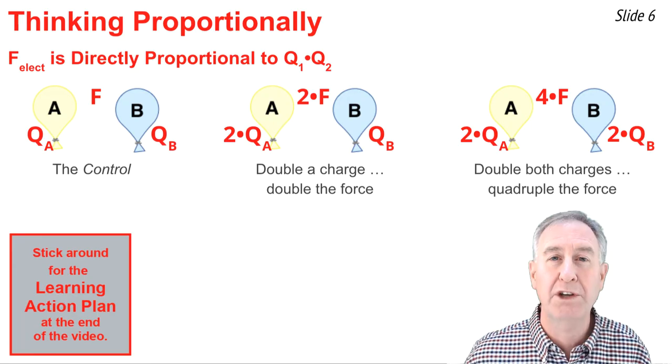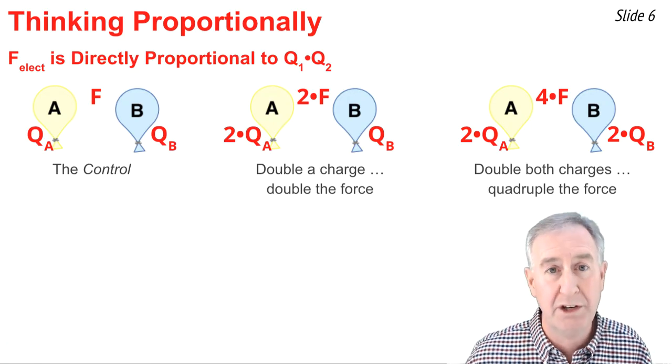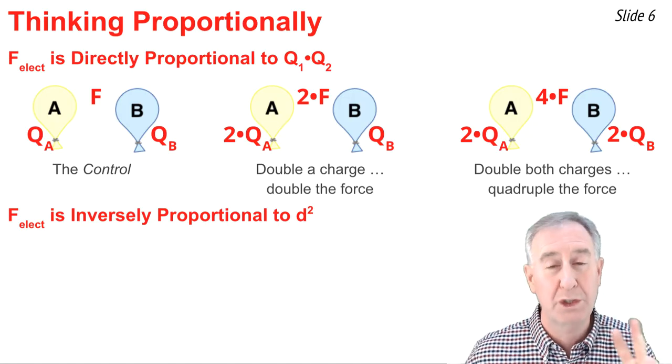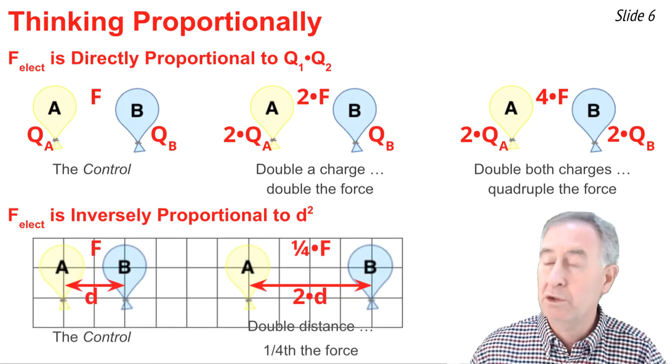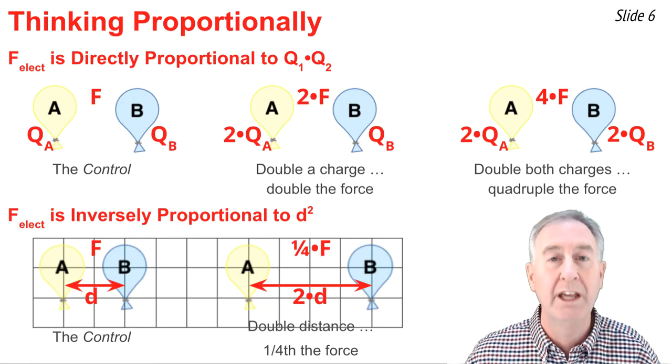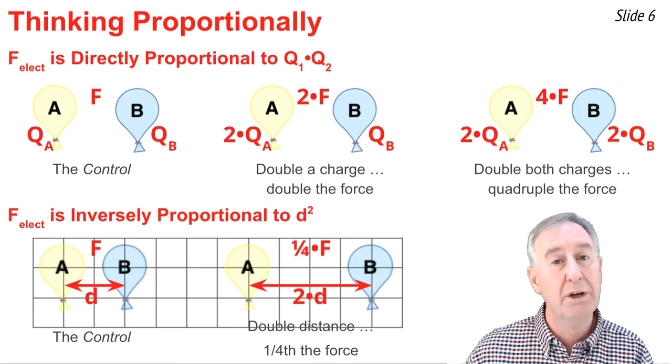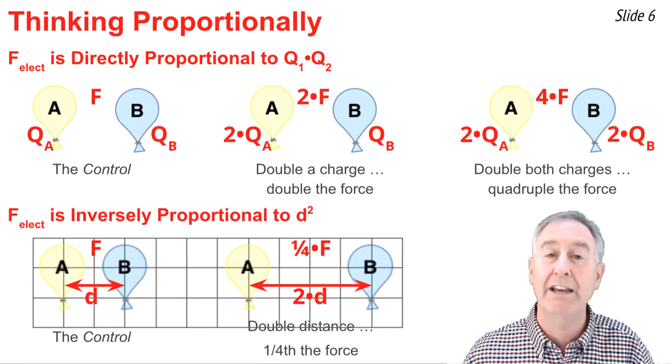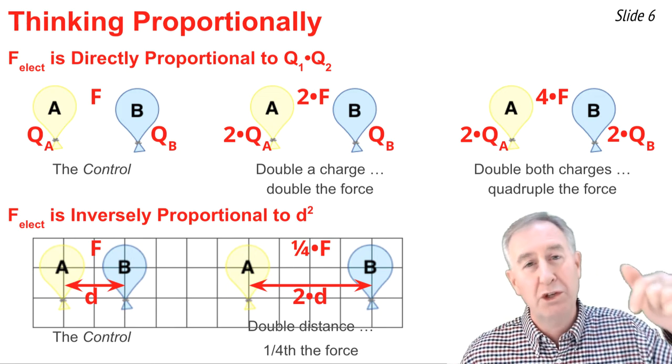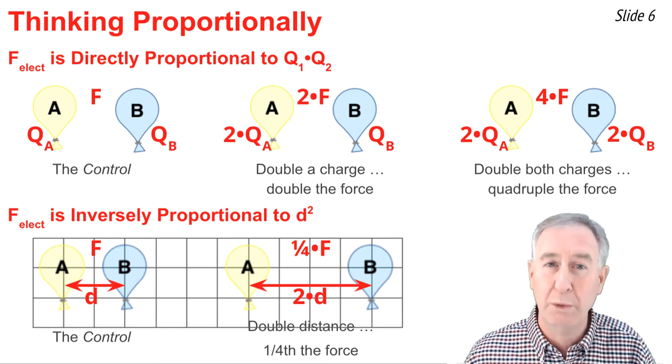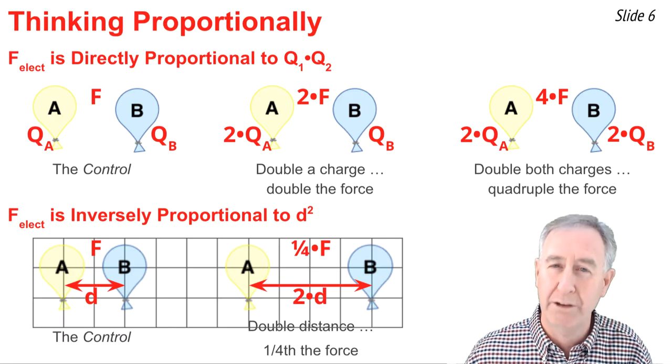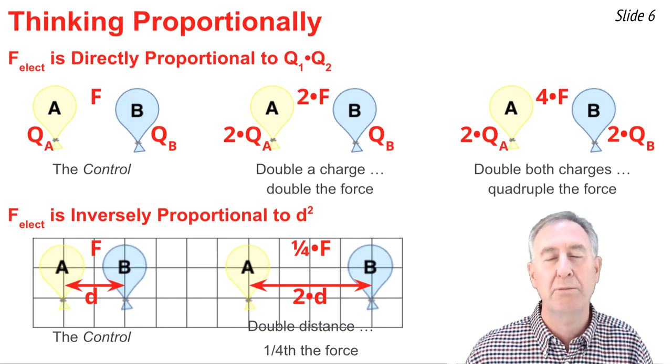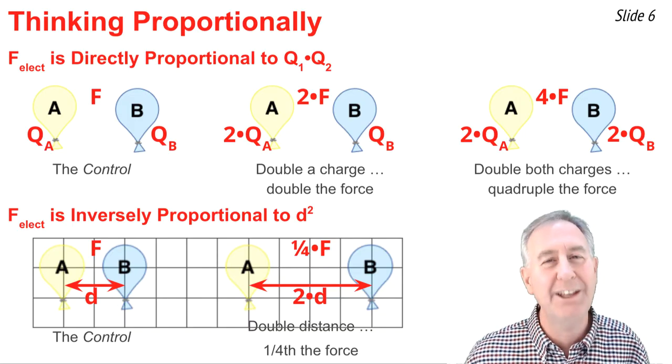This is because electric force is directly proportional to the product of the charges. But it's also inversely proportional to the distance of separation squared. So if we start with two balloons that are two units of distance apart, and then we separate them by four units, we've increased the D value. That should decrease the F value. In fact, if you double the distance, you should decrease the F value by two squared. You would then have one fourth of the force. This idea of thinking proportionally about the equation will be used much more intensely in the next video.